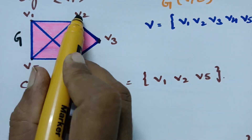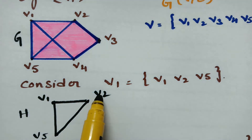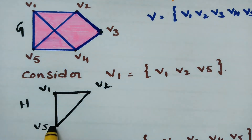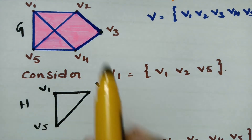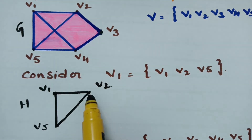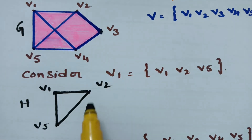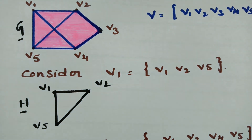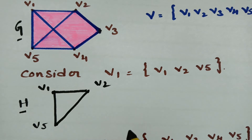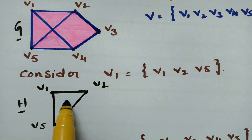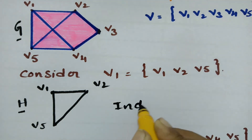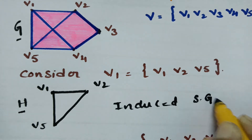v1-v2 has an edge in both G and H. Next, v1-v5 is also an edge in H, and v2-v5 is an edge in G and is also maintained in H. Therefore, H is a subgraph of G, and since all edges of H are edges of G, it is an induced subgraph.